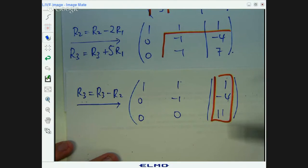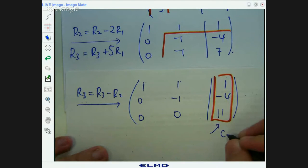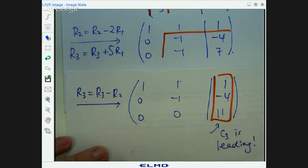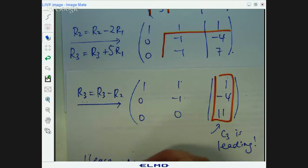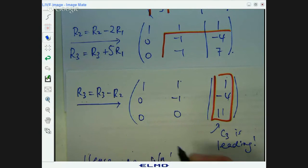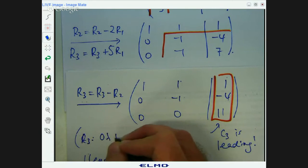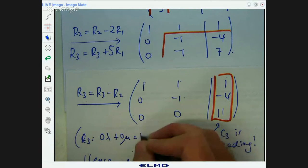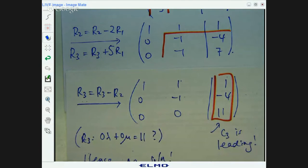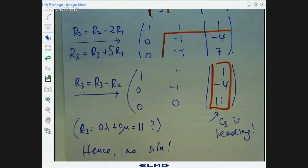Another way of saying is the very right-hand column is leading. Hence, no solution. And if you want to see, row three, zero lambda plus zero mu equals 11. What? There's no solution.